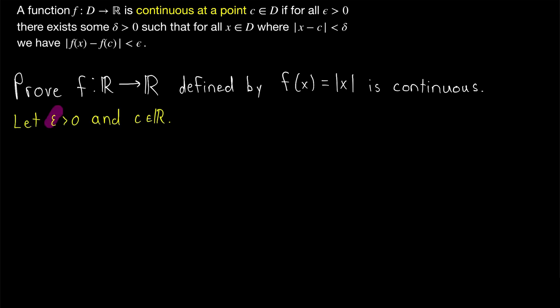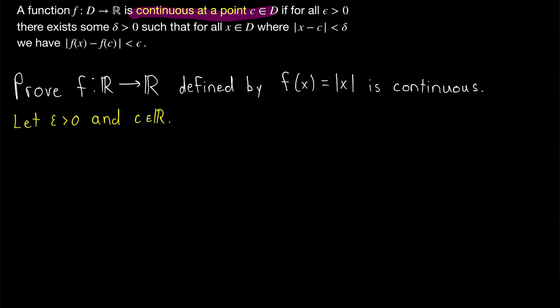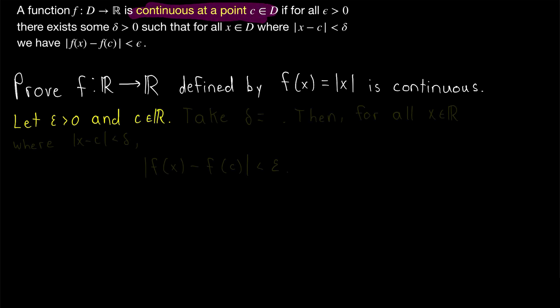We begin our proof by taking an arbitrary epsilon greater than zero. Since we want to prove that our function is continuous on its entire domain, we take an arbitrary point c from the domain. Then we just have to prove that the function is continuous at this point.